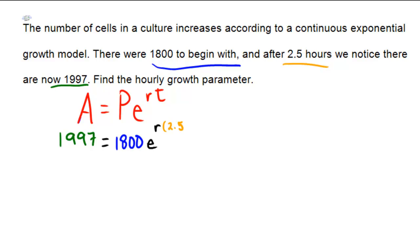Now we're just simply in algebra land, so divide both sides by 1800, and we can see that 1997 over 1800 is equal to e to the 2.5 times r.